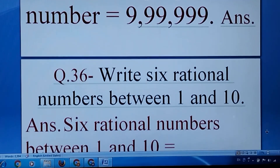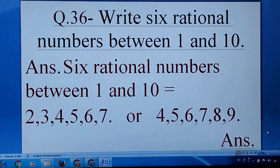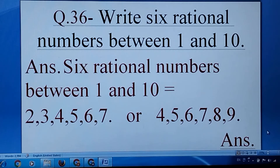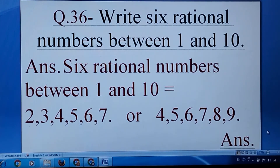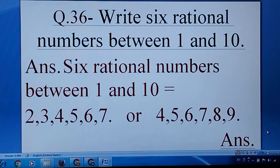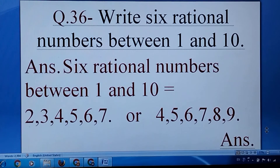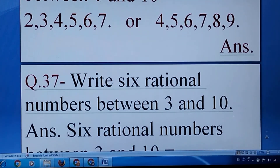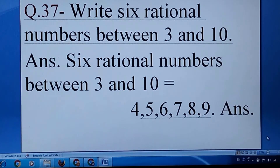Write 6 rational numbers between 1 and 10. Rational numbers are numbers which can be represented in the form of P upon Q, where Q must not be 0. All natural numbers are rational numbers because 1 can be written as 1/1, 10 as 10/1. So 6 rational numbers between 1 and 10 could be 2,3,4,5,6,7 or 4,5,6,7,8,9. Similarly, write 6 rational numbers between 3 and 10: they are 4,5,6,7,8,9.